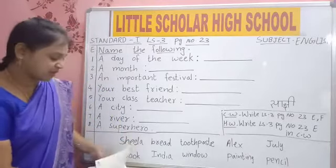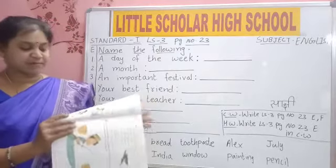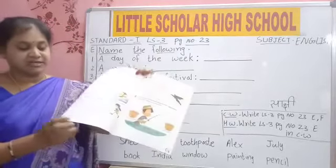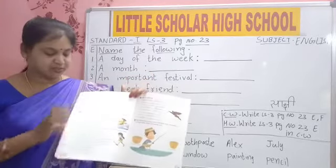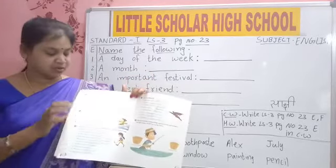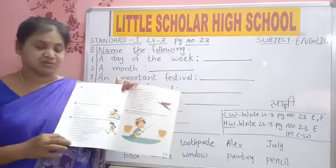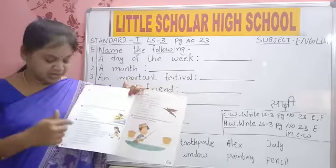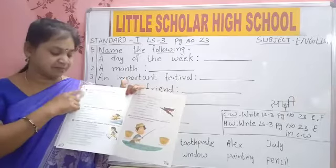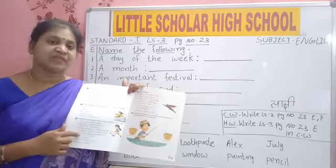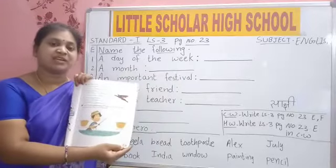Now take your test book. Open your test book, page number 23. Did you finish page number 22, children? We have already completed all bits 1, 2, 3, B, C, D here. Complete in test book, and I told you to write B and D in your classwork also. Complete your work neatly. Now we will discuss page number 23.